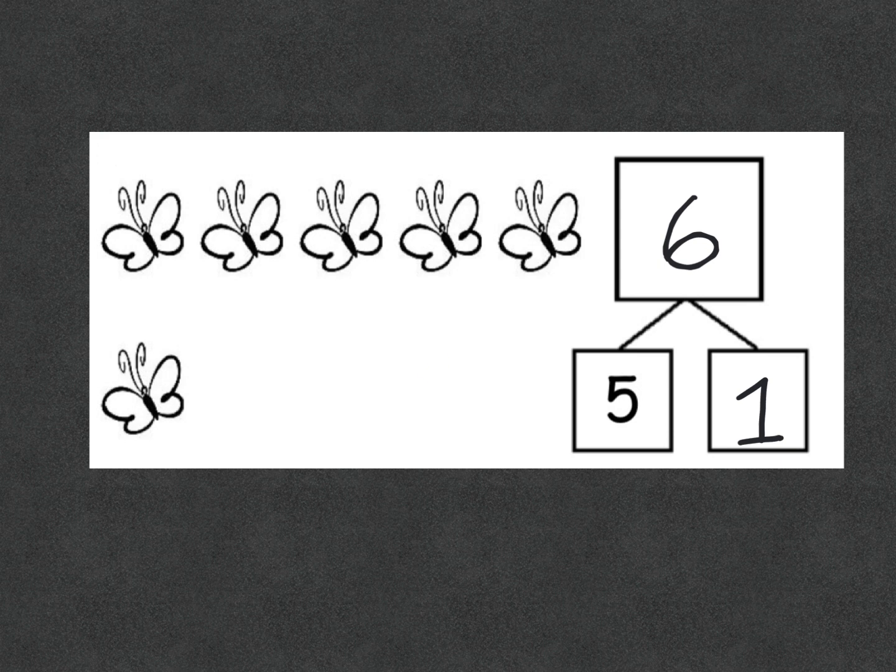Because we have a total of six butterflies, the six will go in the biggest box, which is the total box, and the number of butterflies on top will go into one box, and the number of butterflies on bottom will go into the other box.